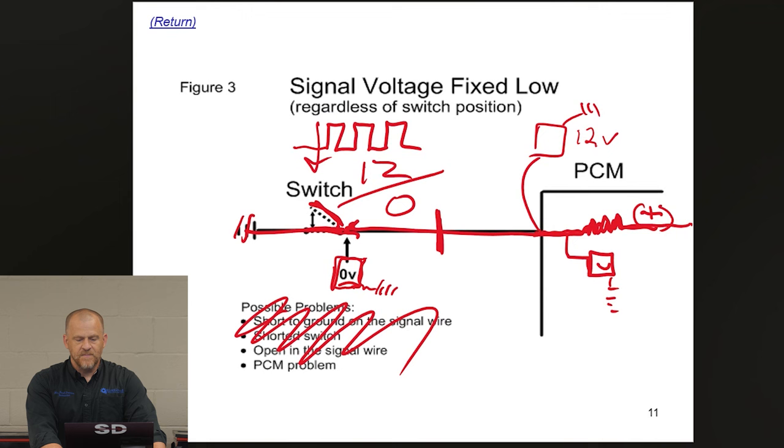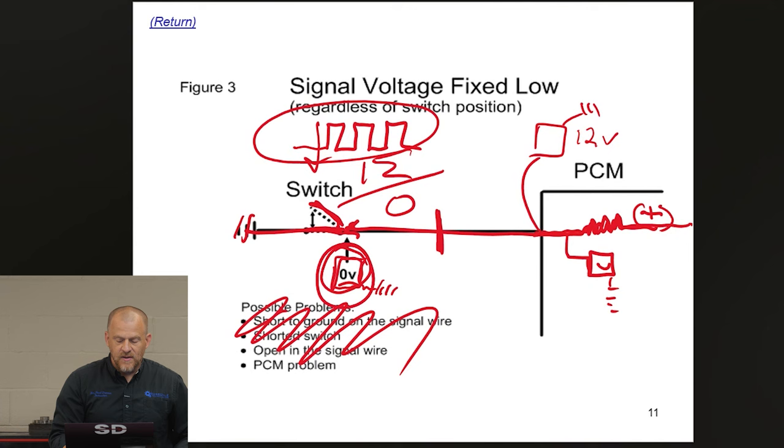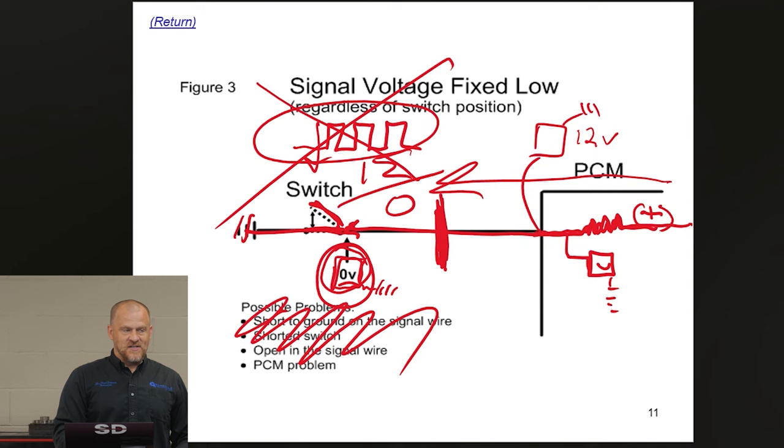Because I was dealing with a pull-down design, and I had a good signal measured at the sensor. Why is that important to know? Because we know the computer is sourcing the voltage this way. We know that if an open exists in that circuit, you can't have a good signal here. It's not possible.